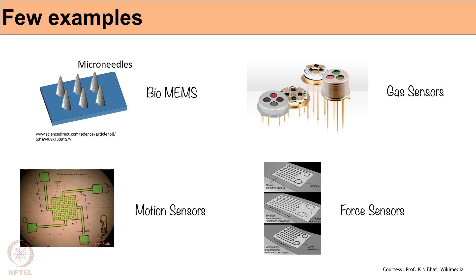Force sensors are another very important example. A material exposed to stress or strain changes its electrical properties - for piezoresistive materials, bending causes elongation and a change in resistivity. By measuring the change in resistance you can determine how much deflection occurred, and from that deflection you can calculate how much force has been applied. This kind of force sensor is also made using micro fabrication technologies.